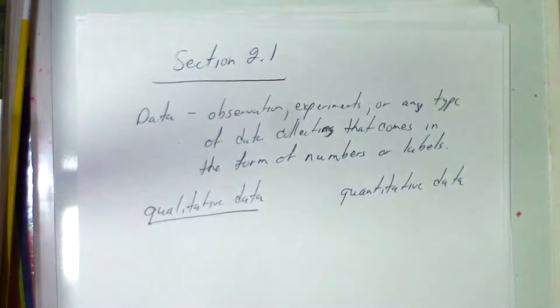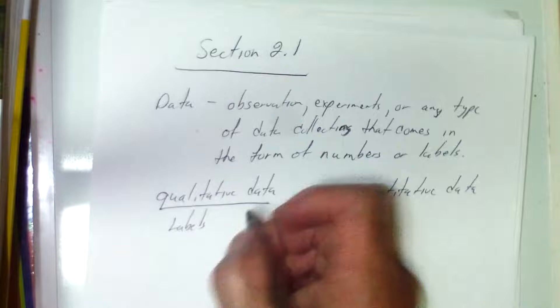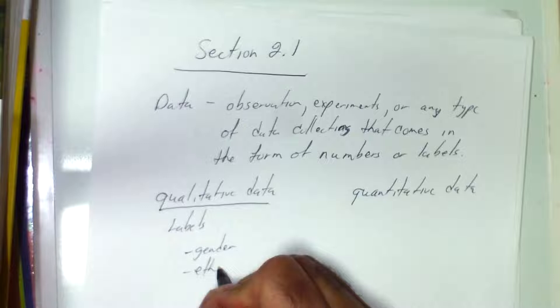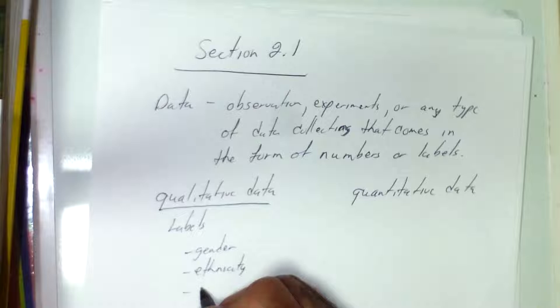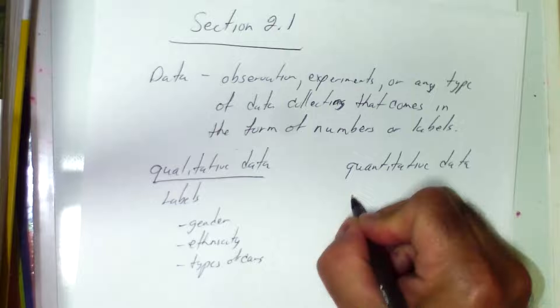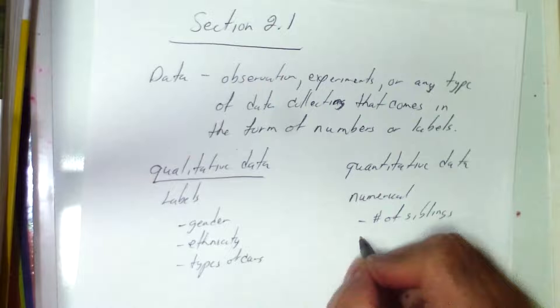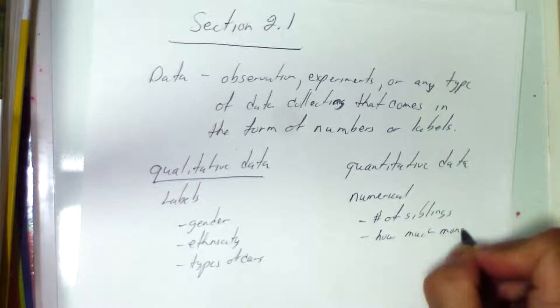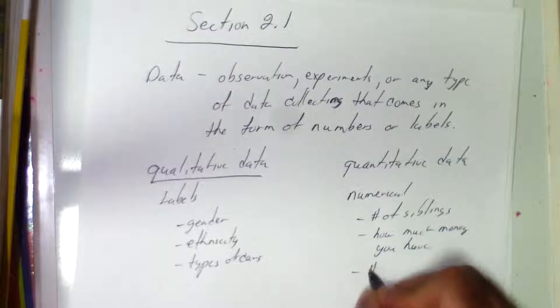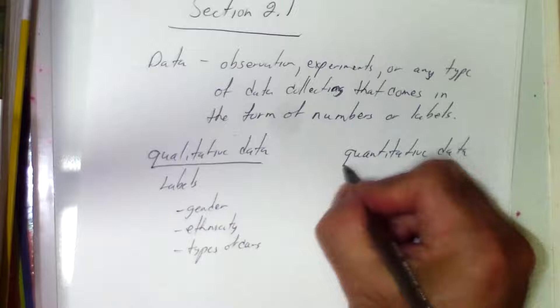Qualitative data are labels such as genders, ethnicity, types of cars — anything that has a label is considered qualitative. Quantitative data is numerical: the number of siblings you have, how much money you have, number of pets. All those are considered to be quantitative numbers.